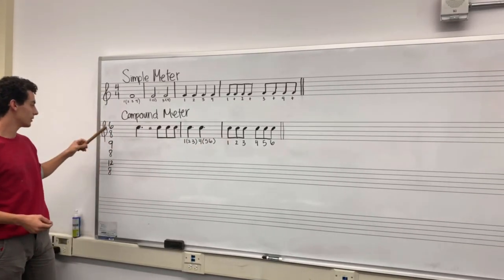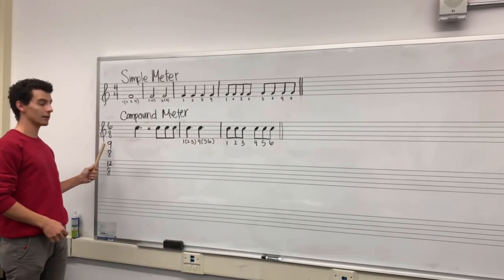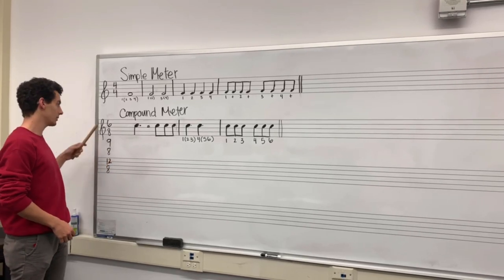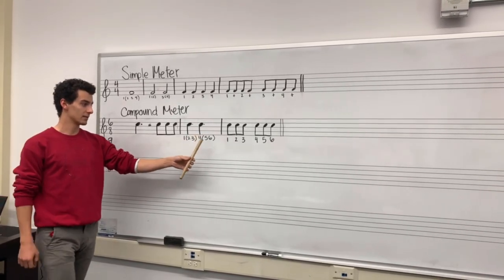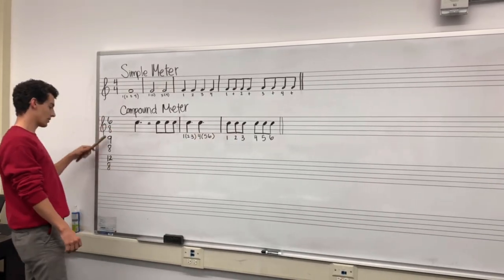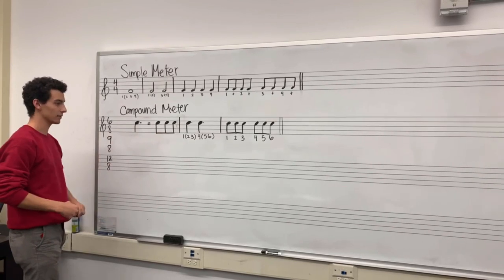Then if we go into nine-eighths, instead of having just two beats per measure, we would have then three as a multiple of three. Multiply three by three, you get nine. So then you break it down into nine eighths. And then so on with 12-8, where you get four beats per measure, and you get twelve eighth notes.